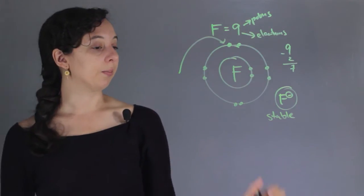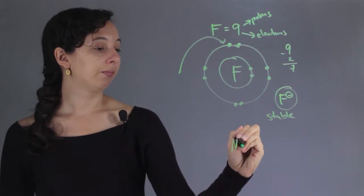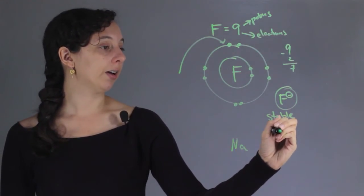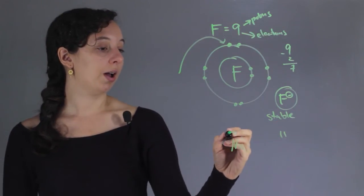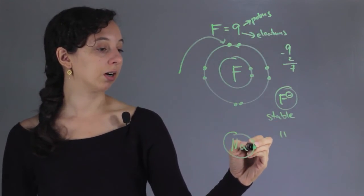Let's take another example of sodium. Sodium is atomic number 11. Just like fluorine, the first shell is filled with 2 electrons.